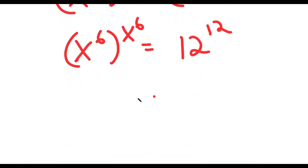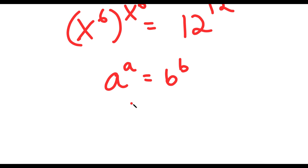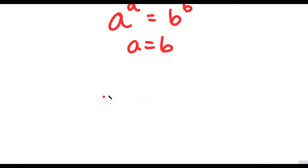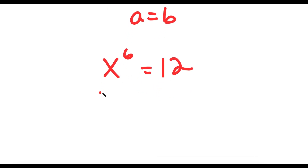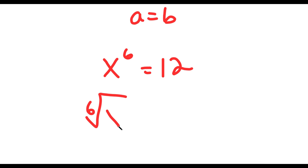And now, my final step is that if I have something in the form a to the power of a is equal to b to the power of b, this means that a equals b. So in this case, x to the power of 6 is equal to 12. So now we want to get rid of this power of 6, so I'm going to take the sixth root on both sides.